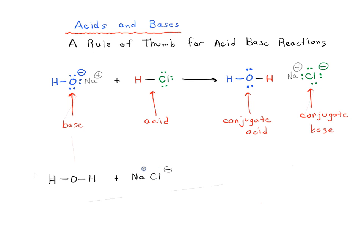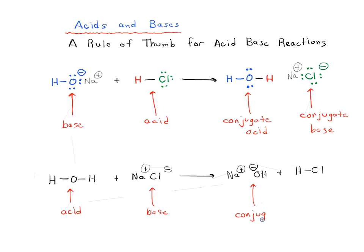Water plus NaCl gives you Na⁺, OH⁻, and then HCl. And so that would be your acid, and that would be your base, and that would be your conjugate base — because you've removed a proton from your acid — and this would be your conjugate acid. So there's nothing wrong with this as an acid-base reaction. Everything's in place. This is a valid acid-base reaction.